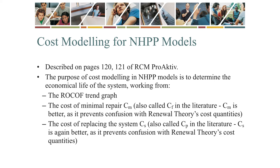In this process, we use the ROCOF curve graph that we fitted — whether that be Rho1(T) or Rho2(T). We also have two cost figures to use in the model: CM, the cost of minimal repair, and CS, the cost of system replacement. In the literature, CM is often called CF and CS called CP. However, this causes confusion when the same cost symbols as those used in renewal are employed with completely different meanings.